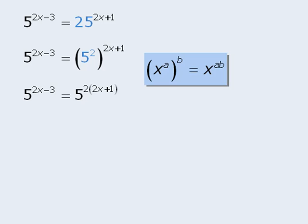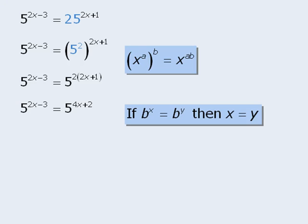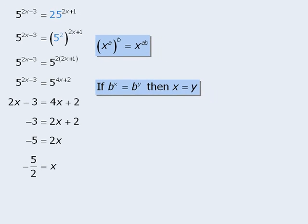From here, when we expand the exponent on the right-hand side, we can see that the base on the left-hand side is now equal to the base on the right-hand side. As such, we can apply our rule to see that the two exponents must be equal. To solve for x, we subtract 2x from both sides, then subtract 2 from both sides, and then divide both sides by 2 to get x equals negative 5 halves.